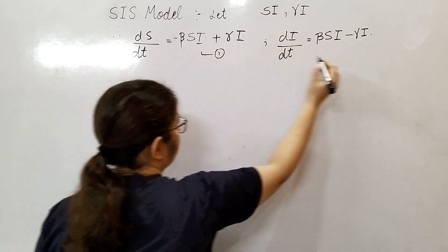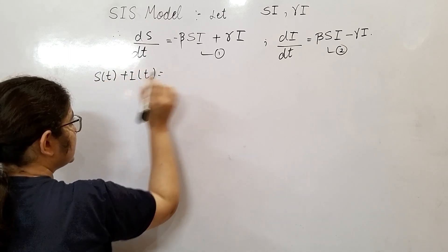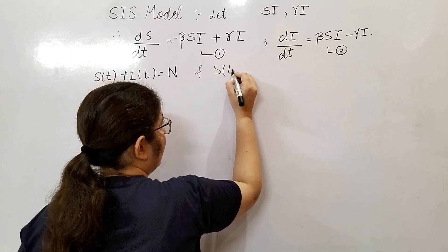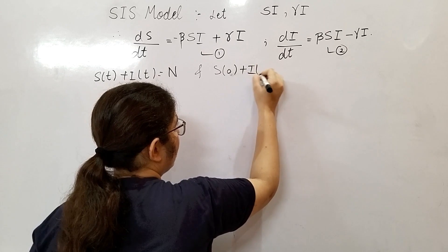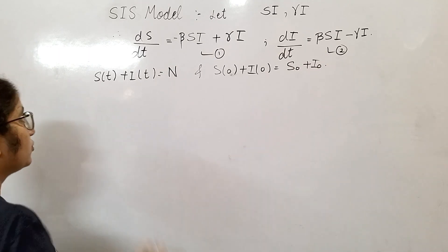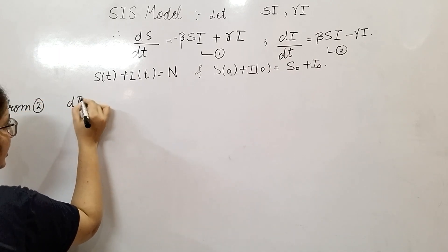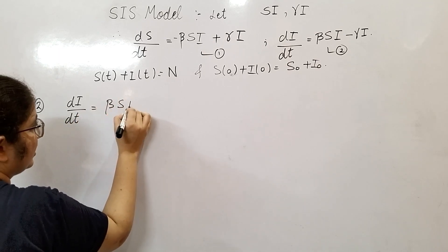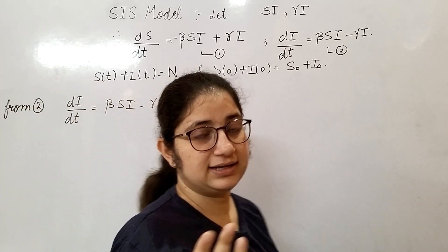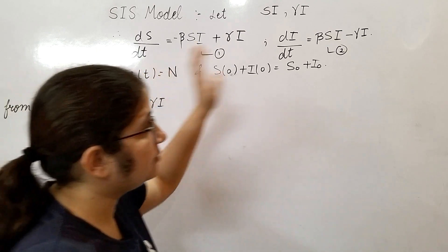This is equation one and equation two, with initial conditions: S(t) + I(t) = N, and initially S₀ + I₀ = N. Since we have two variables and want to integrate, we reduce to one variable. From the conservation equation we can find the value of S and substitute it into the equation for dI/dt.